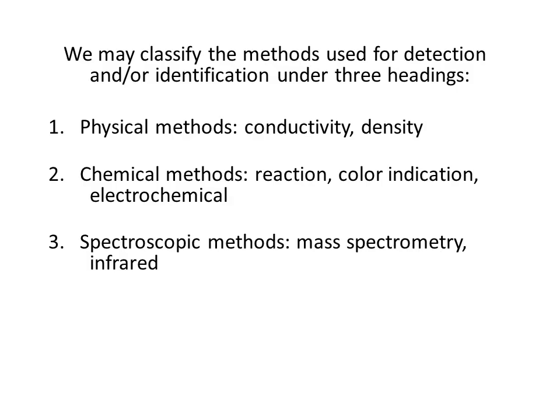We may classify the various methods for detection or identification of evolved gases under three headings. Number one is physical methods, which may be based upon conductivity or density. Number two is chemical methods, based upon reactions, color indication, or electrochemical properties. Number three is spectroscopic methods, like mass spectrometry and infrared spectroscopy.